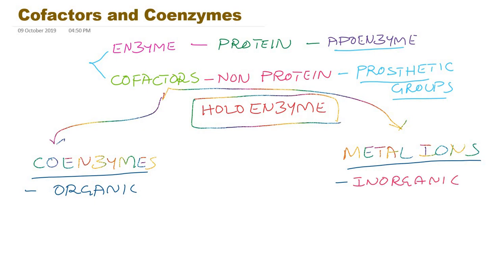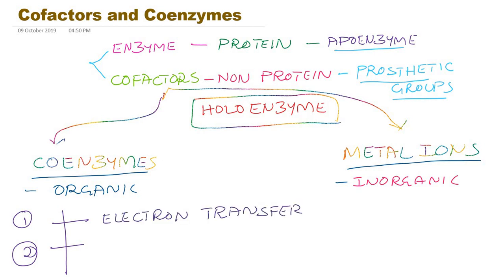First we will discuss about coenzymes. There are two types of coenzymes. The first category usually involves transfer of electrons — we already studied in enzyme classification — so these coenzymes participate in oxidation-reduction reactions. The other category of coenzymes helps in group transfer, that is functional group transfer. Coenzymes are organic components and prosthetic groups, and they are classified into these two categories.